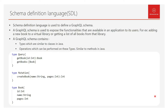The Schema Definition Language is used to define a GraphQL schema. A GraphQL schema is used to expose the functionalities available in an application to its users. For example, suppose we have an application called Virtual Library which mimics the behavior of a real library. Possible operations could be adding a new book to the library, or getting a list of all books available. These are the operations or functionalities that are going to be exposed to the users, and in order to expose them, we use a GraphQL schema.